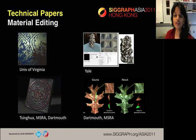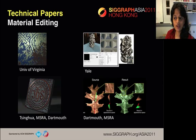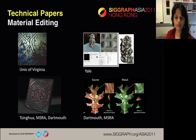In the Material Editing session, we have a user-guided algorithm for editing spatially varying BRDFs. A physically-based interactive editing system for bi-scale material editing. An interactive system for modeling spatially varying reflectance properties and normals from one image. And an algorithm for retargeting measured materials.